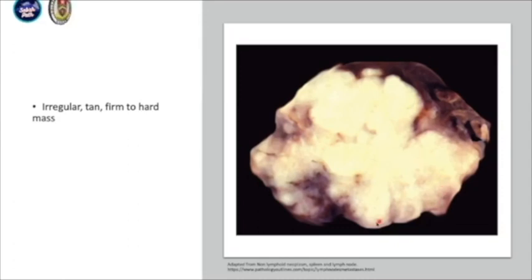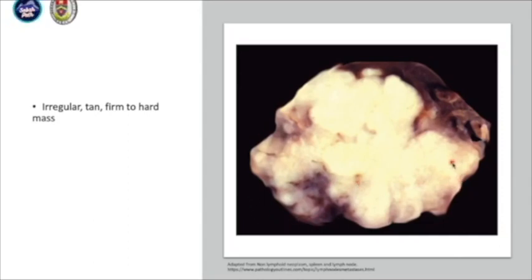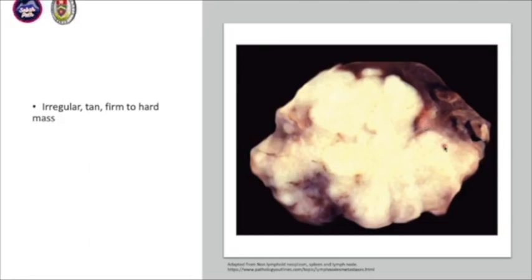In this case, you can see the lymph nodes are enlarged with this irregular, firm-to-hard mass. The border is not well defined, and it's almost replacing all of the lymph node tissue — you can hardly see any normal lymph node tissue here. This is quite an advanced metastatic lesion. Usually in the early lesion, you can see it in the subcapsular region — sometimes in the early stage it's only confined there.